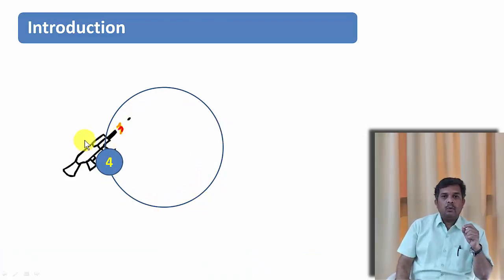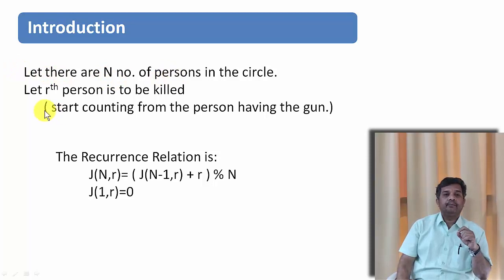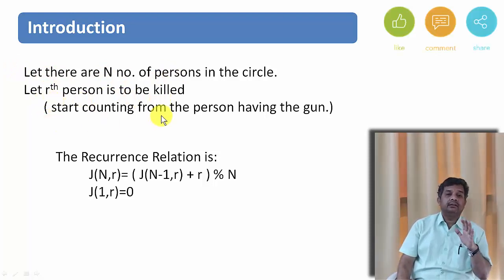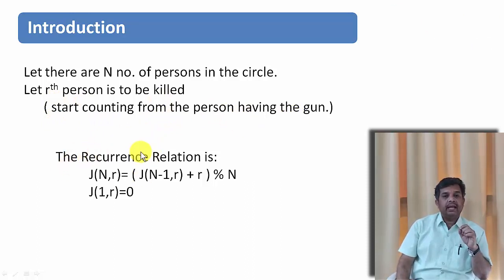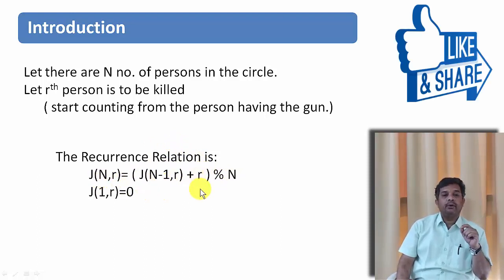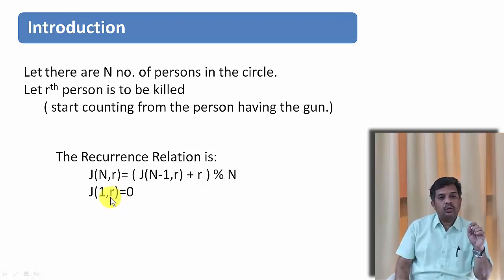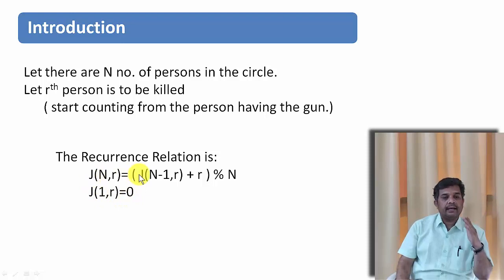Starting at the 0th point, we are trying to kill the neighbor and find which person is going to be alive. Let there be N persons in a circle and the Rth person to be killed. We count starting from the person having the gun. The recurrence relation we will use is: j(n, r) = (j(n-1, r) + r) mod n. After the first execution, the number of persons becomes n-1, and again n-1 fellows will kill the Rth fellow. As it is a circular queue we perform mod n. We stop when only one fellow is remaining — that person wins, so the base case result is 0.